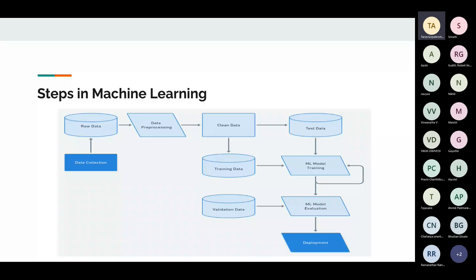If I were to predict house prices in Koramangala, I'd go to different places, find the locality, and collect data like rent, total house price, number of floors, number of rooms, and square footage. You collect as much data as possible — there's no such thing as too much data in machine learning.